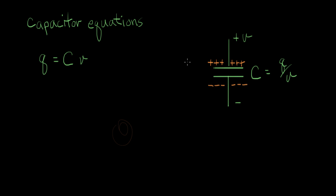This collection of excess charge will be Q-plus, and the charge on the bottom plate will be Q-minus. They're going to be the same value with opposite signs. When the capacitor is in this state, we say it's storing this much charge. That's what it means for a capacitor to store charge.